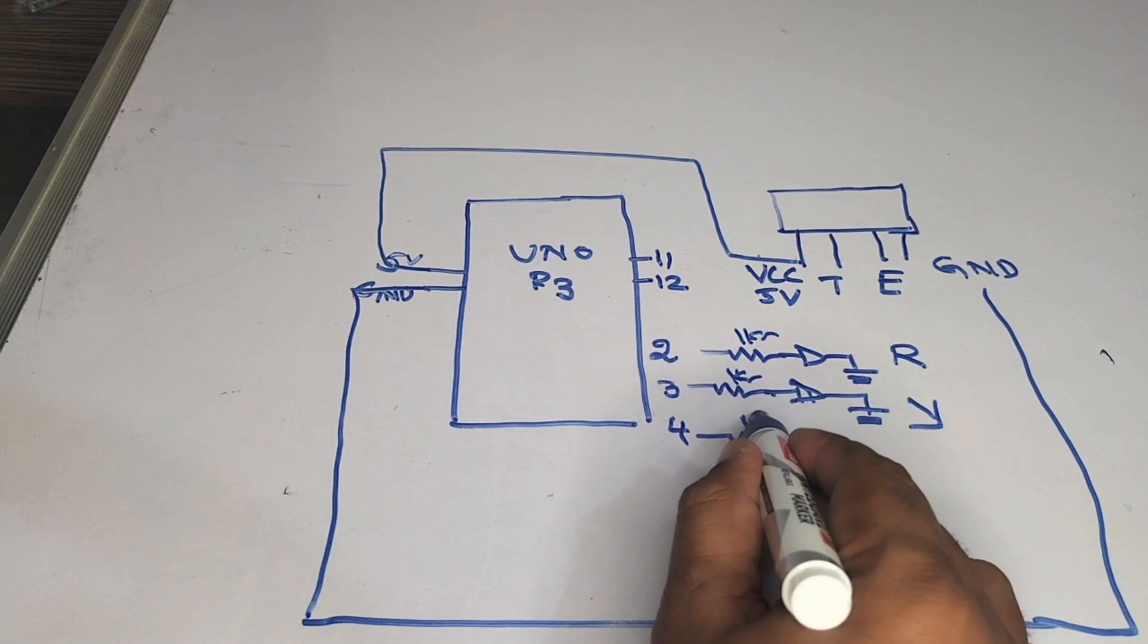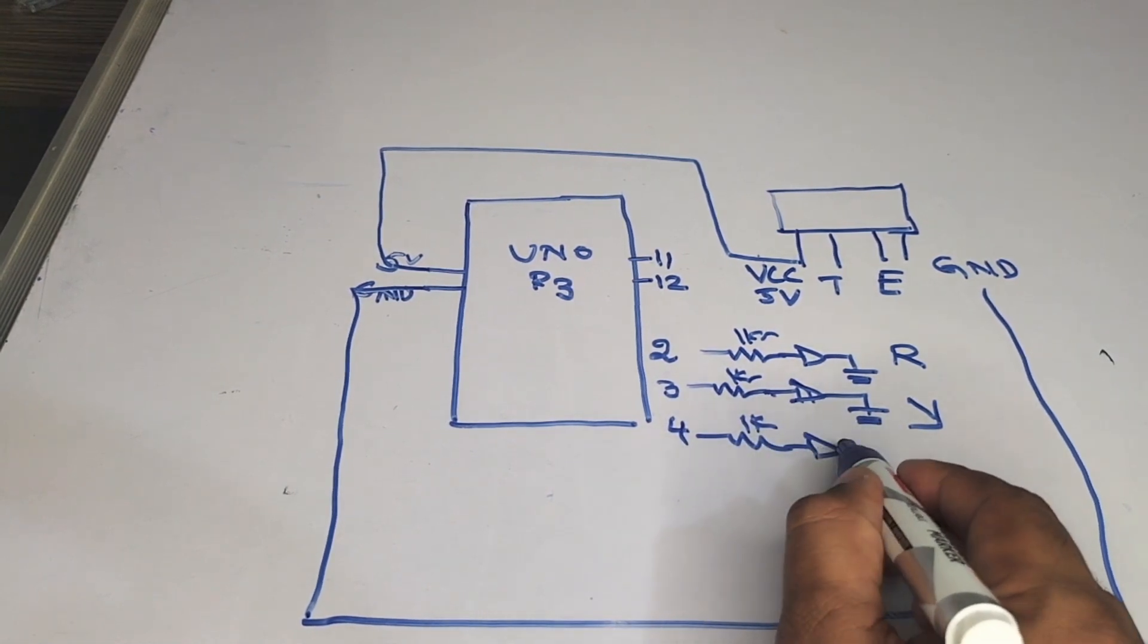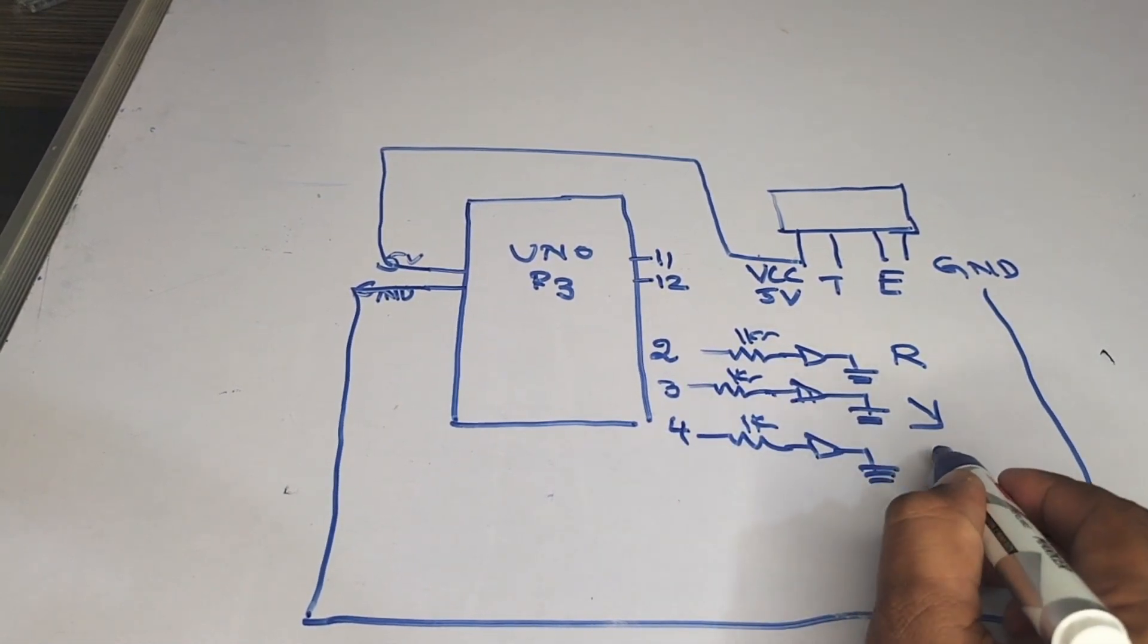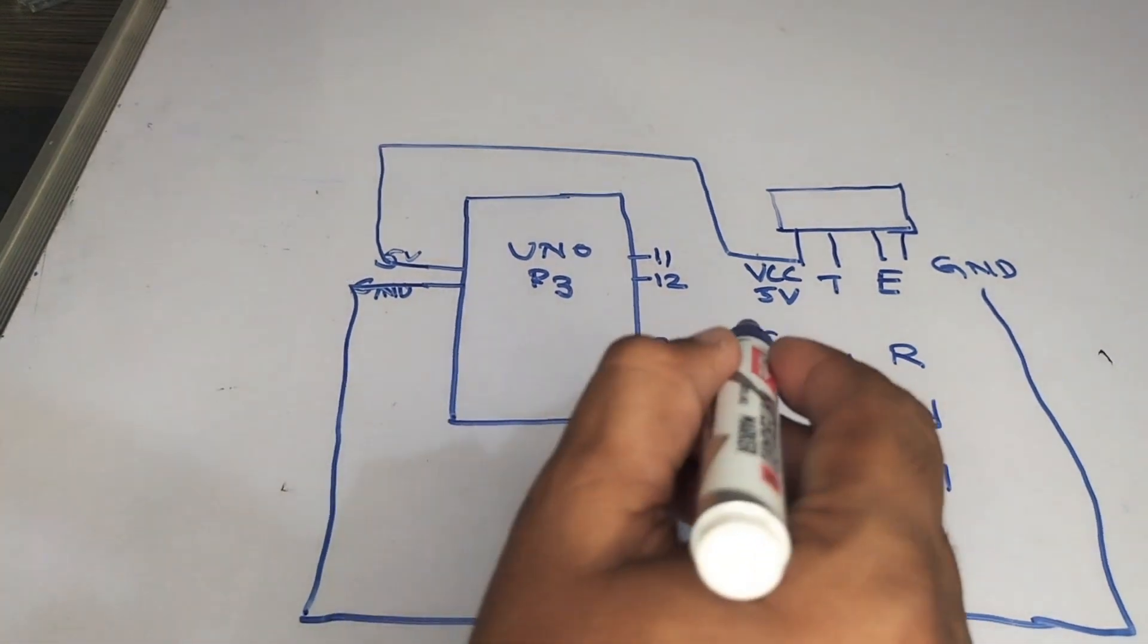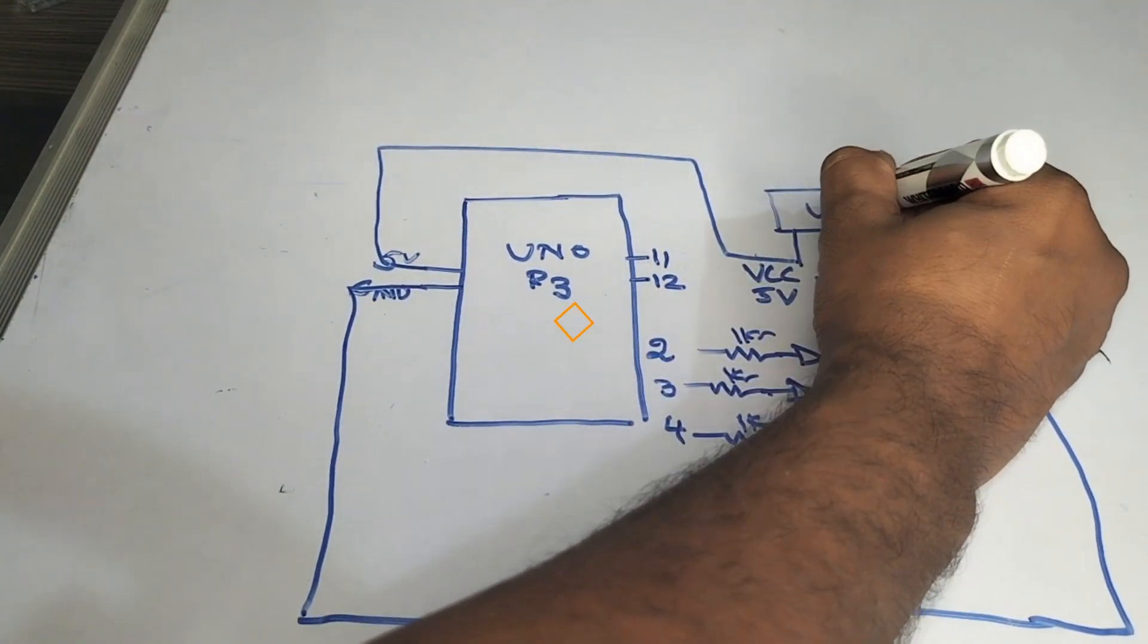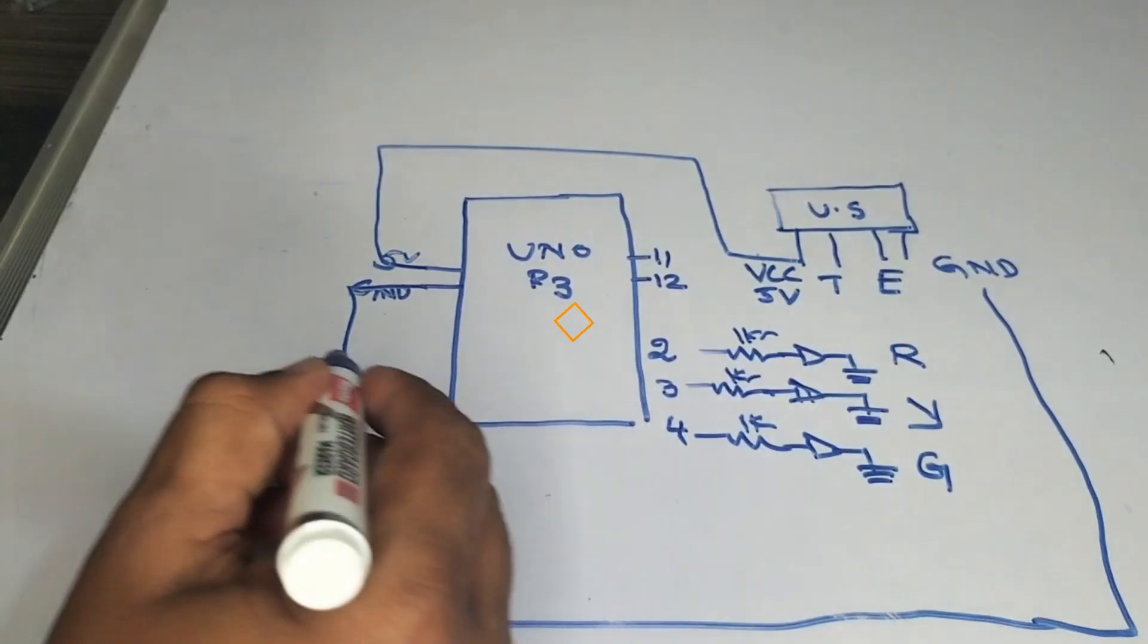It is with 1k and the green LED. It is going to the fourth pin. So these are the typical connections which have been given to you, friend. This is the ultrasonic sensor.